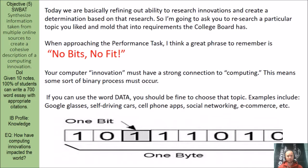Today we're basically refining our ability to research innovations and create a determination based on that research. I'm going to ask you to research a particular topic you liked and mold that into the requirements that the College Board has. Basically, you're going to search again for something you've already learned about in one of your Flash Talks, and put that into the requirements the College Board is looking for in order to satisfy the performance task part of the AP test.